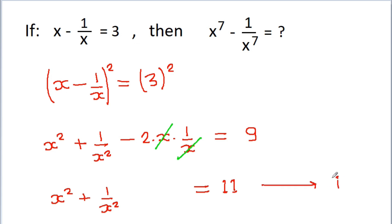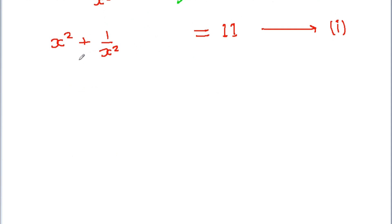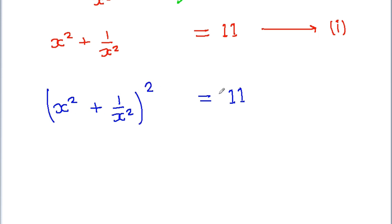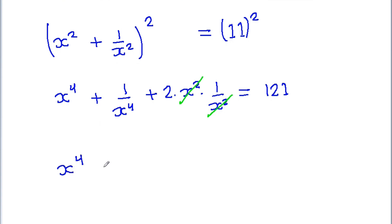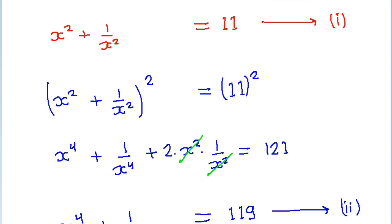Let's call this equation 1. Now we have x squared plus 1 by x squared is equal to 11. If we square both sides again, we get x squared plus 1 by x squared whole square equals 11 squared. That gives x to the power 4 plus 1 by x to the power 4 plus 2 into x squared into 1 by x squared equals 121. This x squared and 1 by x squared cancel, so x to the power 4 plus 1 by x to the power 4 equals 119. Let's call this equation 2.